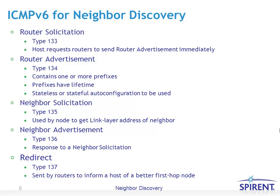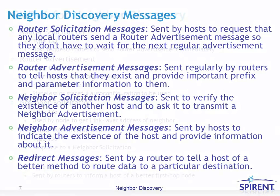A Neighbor Advertisement message is type 136, used in response to a Neighbor Solicitation. Finally, a Redirect message type 137 is sent by routers to inform a host of a better next-hop node. These different message types — Router Solicitation, Router Advertisement, Neighbor Solicitation, Neighbor Advertisement, and Redirect — are sent for different reasons that will be covered in the following slides.